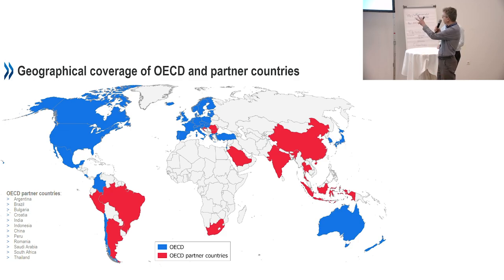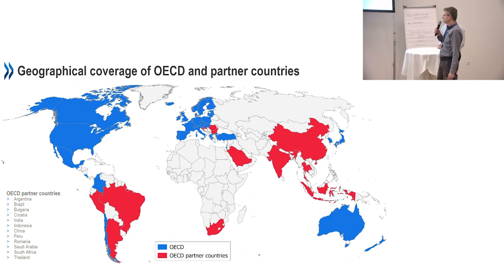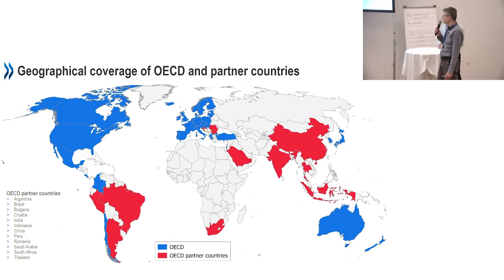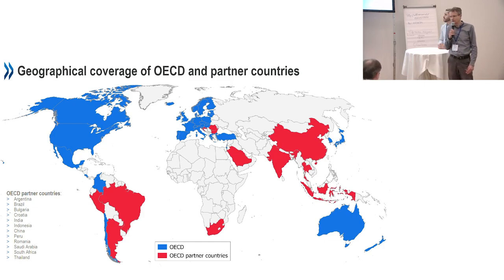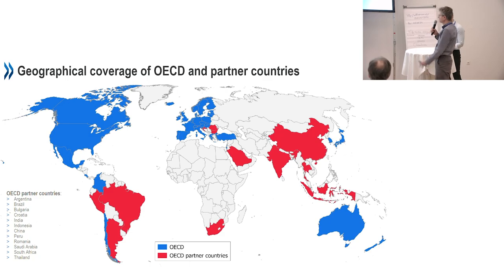The member countries are shown in blue. The partner countries are shown in red, and these are essentially of two types: either countries in accession discussions to potentially become a member country, or other countries with whom we have strategic closer cooperation in certain areas. Most of the G20 countries are there.